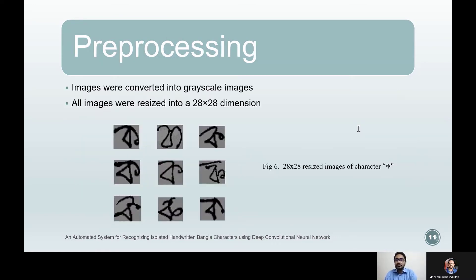Before feeding the images into the model, some pre-processing was done to extract features more easily. First, the raw images were converted into grayscale images, where each pixel value is a single integer from 0 to 255 representing brightness — 0 for black and 255 for white. Since the sizes of collected images differed, all were resized to a 28 by 28 dimension to maintain an equal input shape. The figure shows some resized grayscale images used as input to the convolutional neural network.